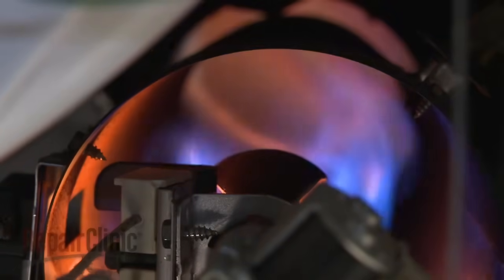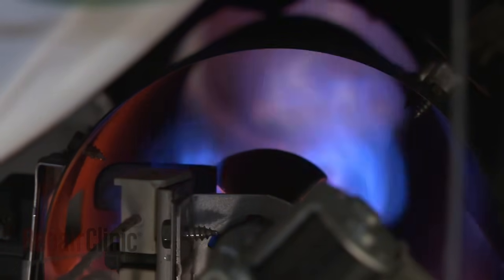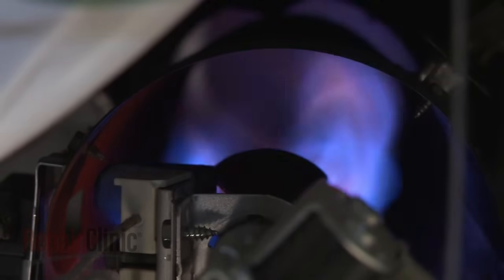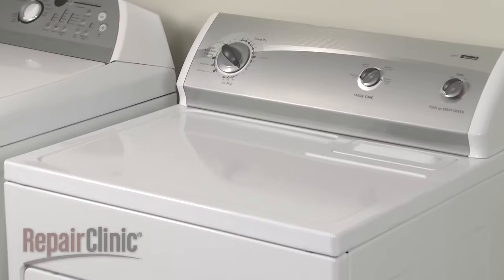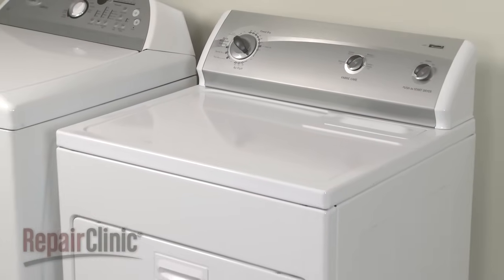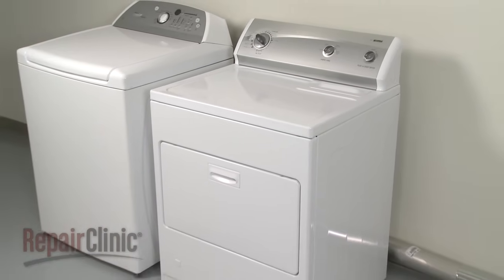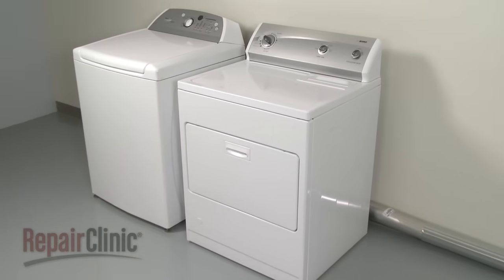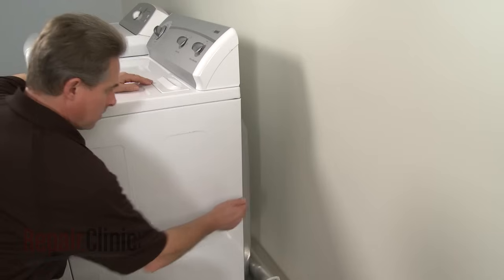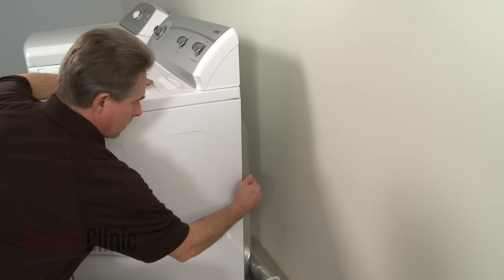For gas dryers, the air is heated by a burner, and air flow is vital to its proper operation. To ensure your dryer has sufficient air to operate, it should be located in an open, well-ventilated area and not in a cramped closet or laundry room. For proper air flow, the rear of the appliance should be kept several inches away from the wall.